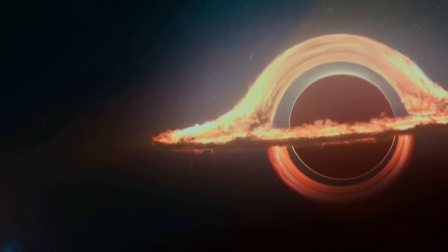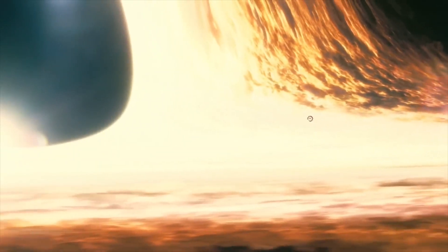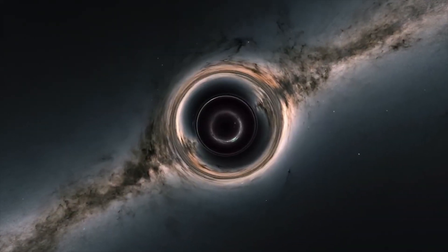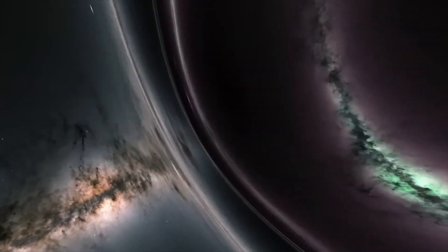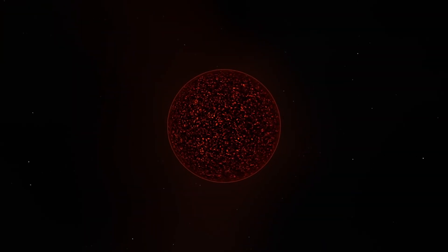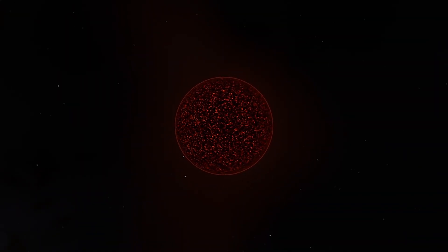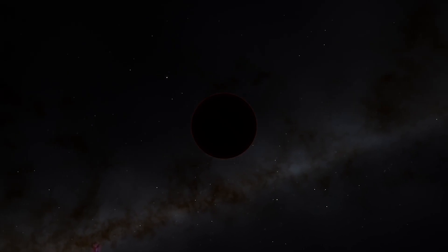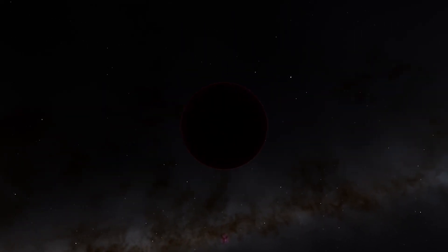To give you a sense of the incredible power of a black hole's gravity, let's consider the escape velocity. This is the minimum speed an object needs to overcome a celestial body's gravitational pull and break free. For Earth, the escape velocity is about 40,270 kilometers per hour, 25,020 miles per hour.